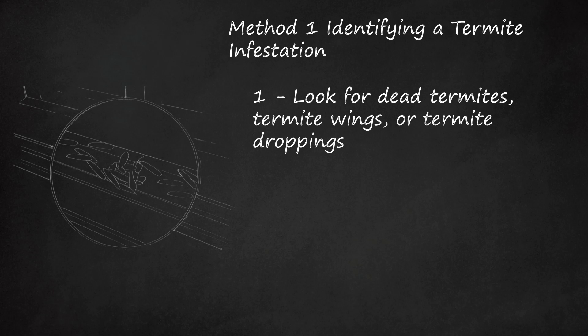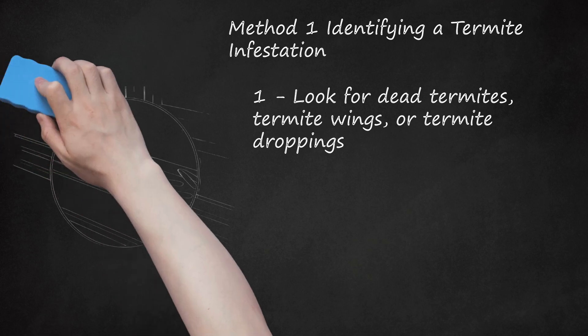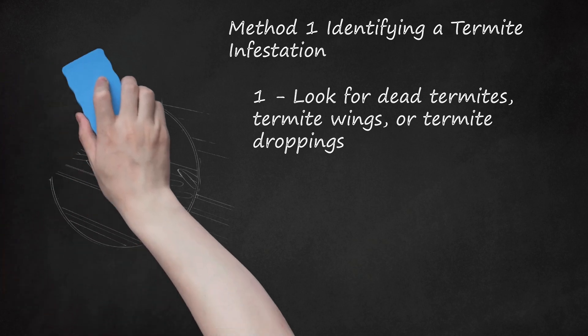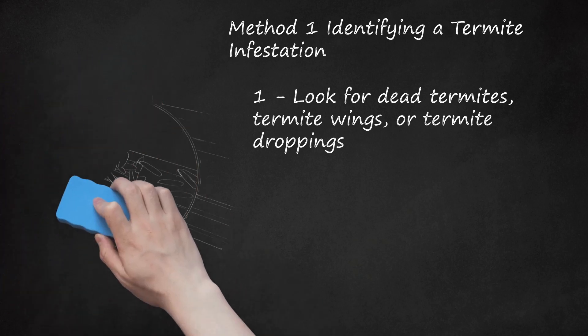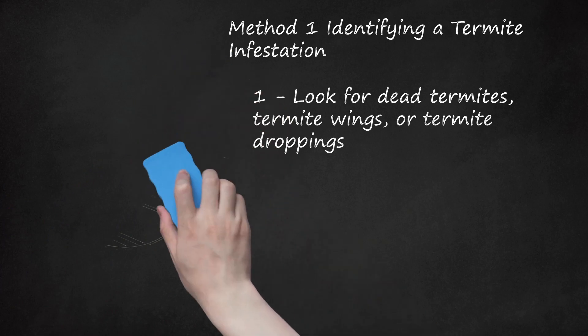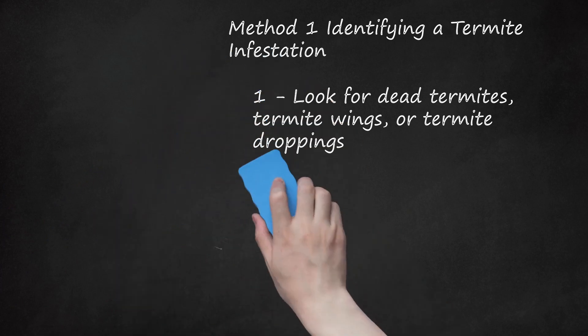Termites will leave worm-like mud tunnels that are visible on the surface of walls within your house. These tunnels are used to protect worker termites. To determine if it's an ant or a termite, look at its antennae. If they are bent, this is a sign you have flying ants. If they are straight, then they are termites.